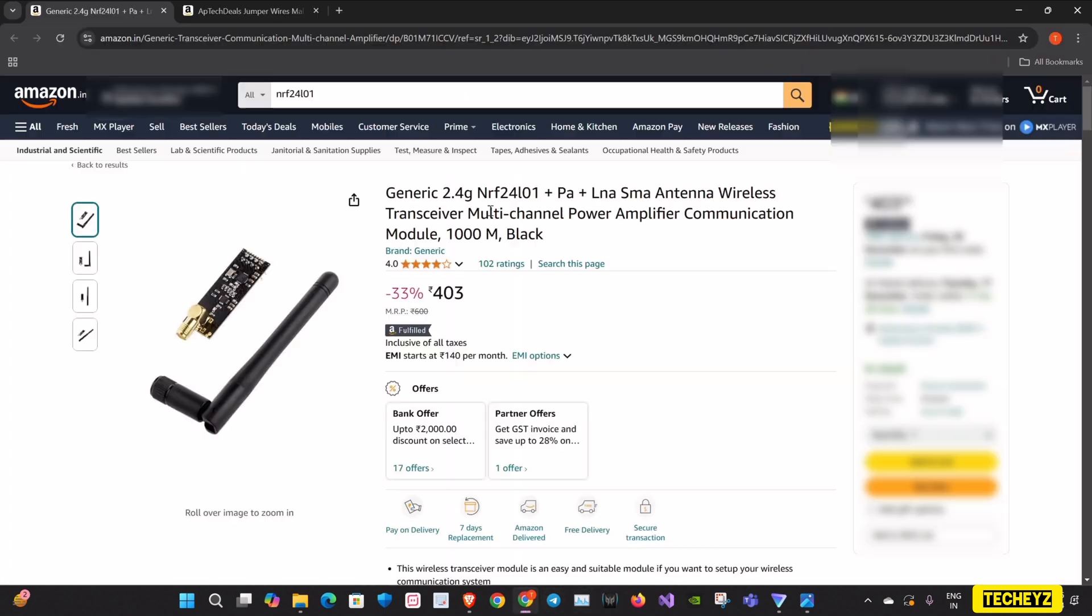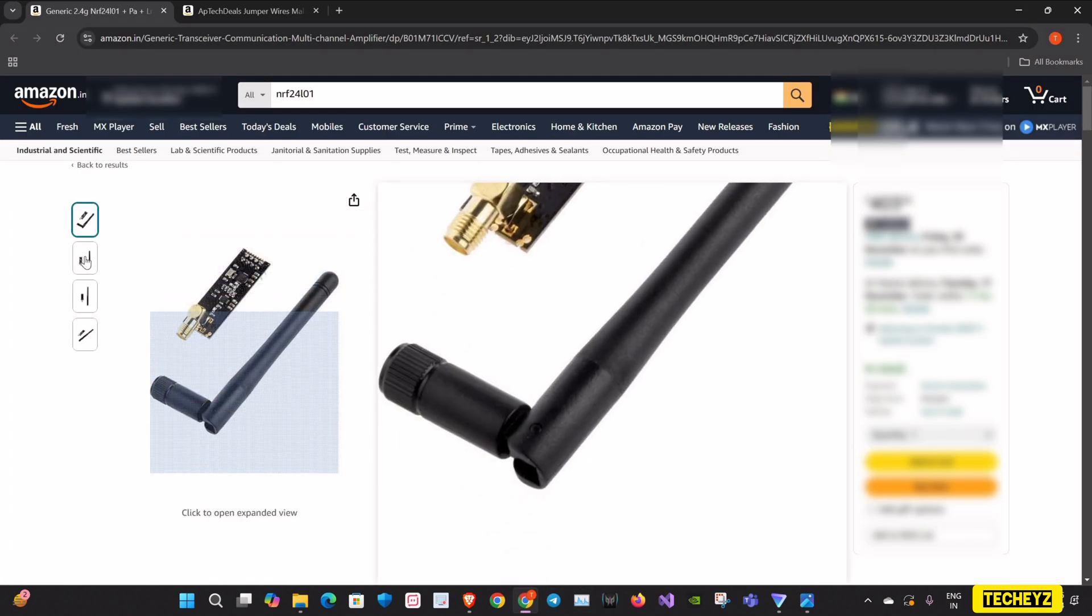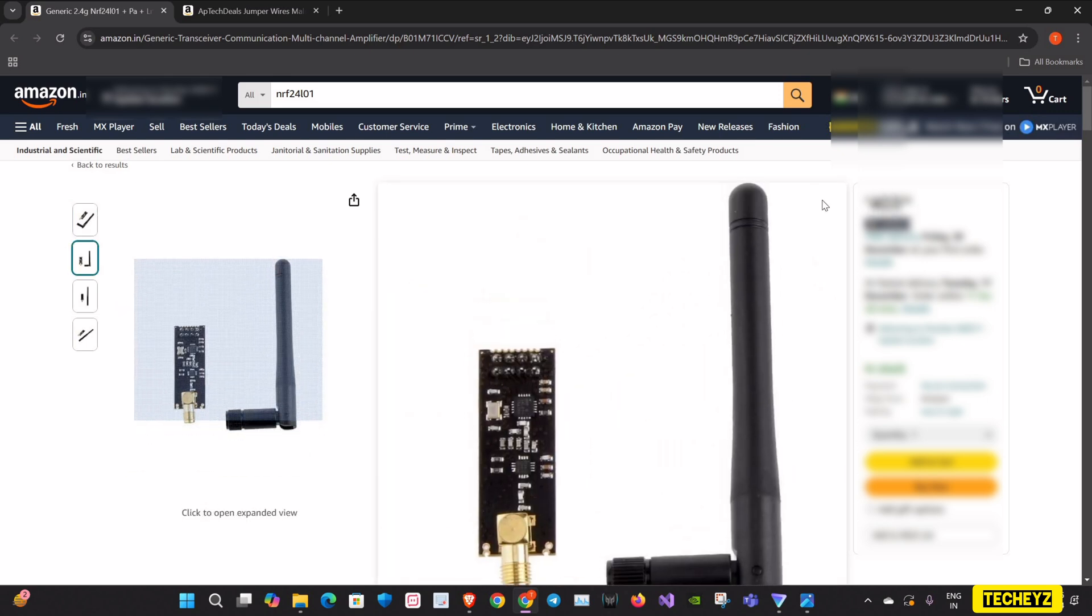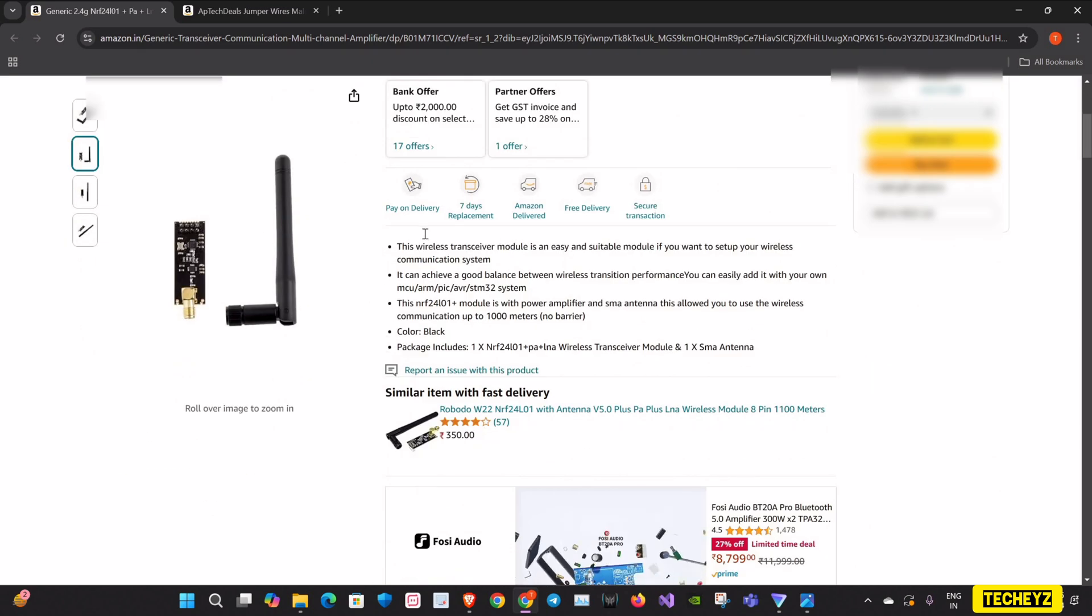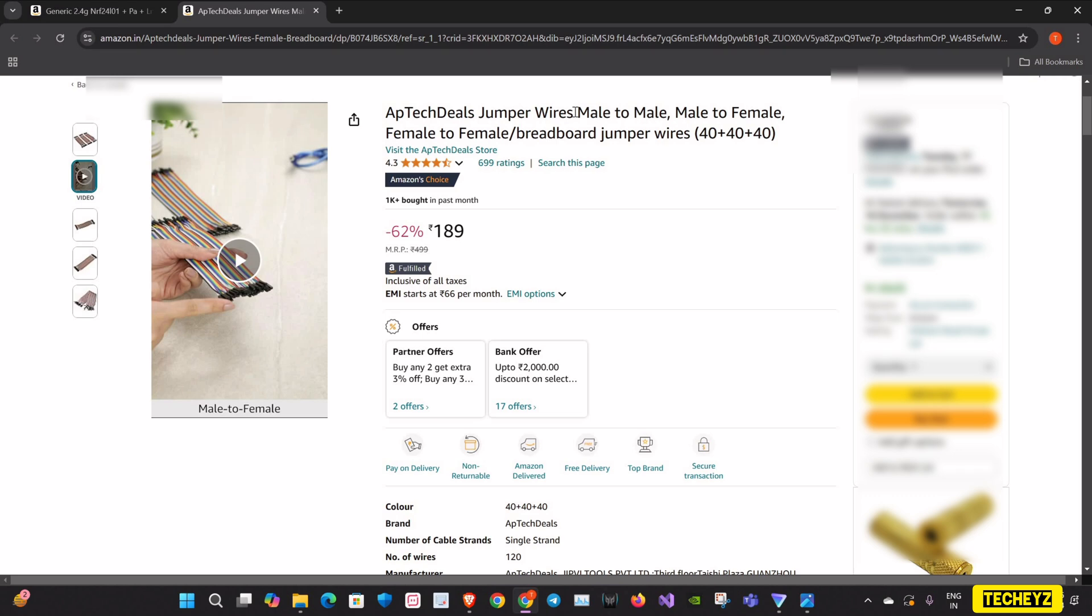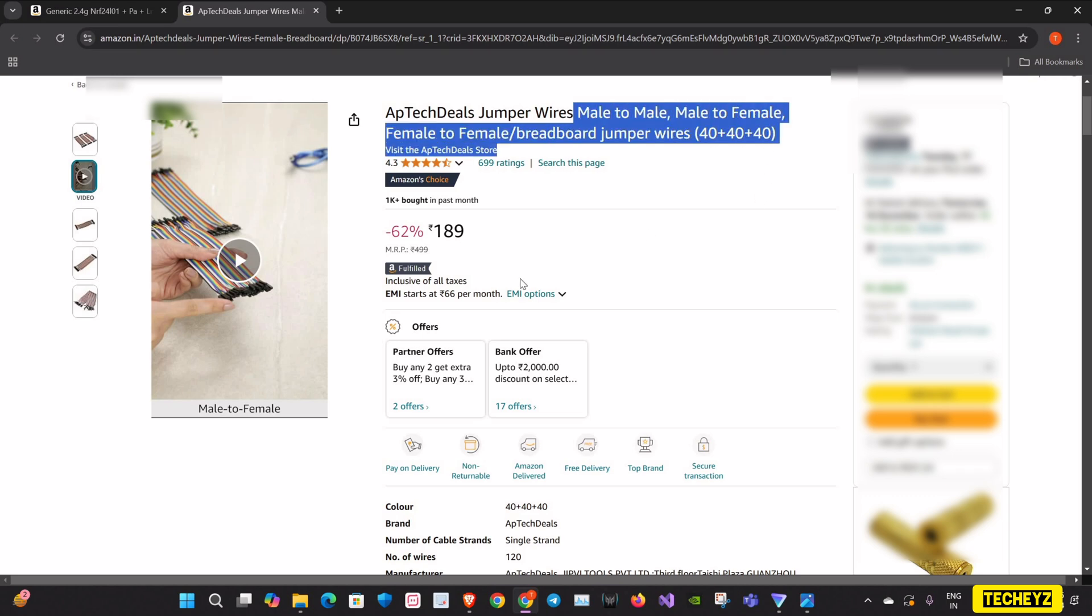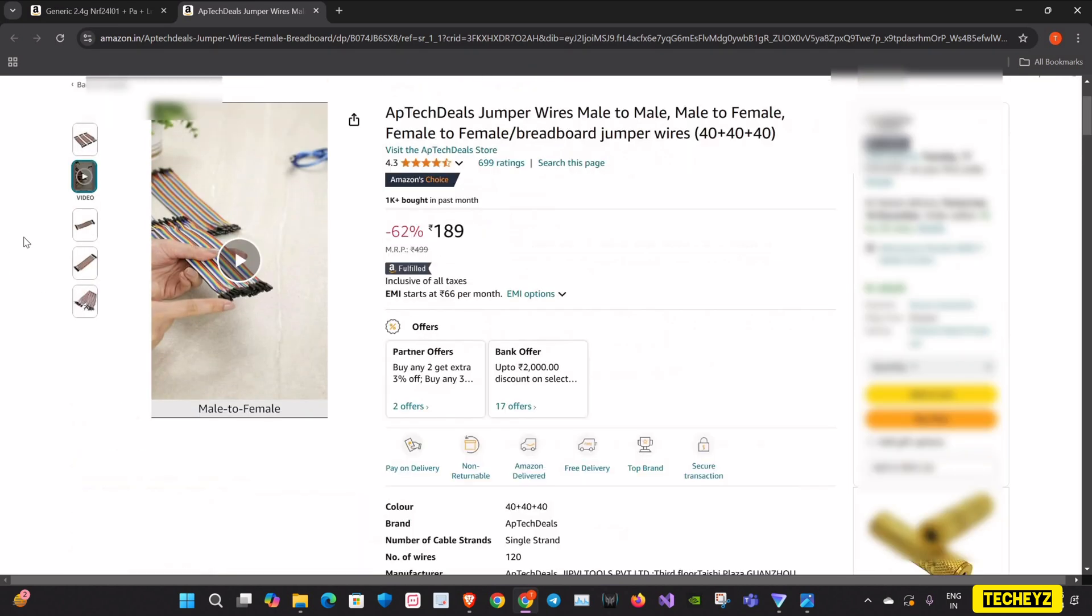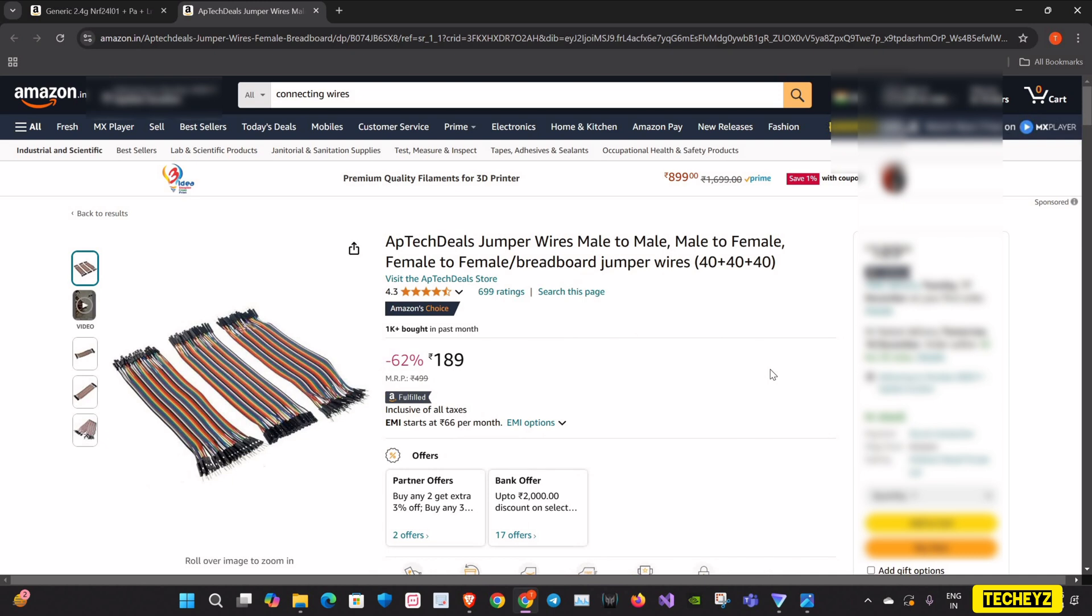The NRF24 module which I am using for my demonstration is already available on Amazon at a reasonable price. You can get it from here and also I'll be using some connecting wires which is mostly male to female and female to female connecting wires which again you can find on Amazon. Once you have all these things ready, we can proceed with our demonstration.